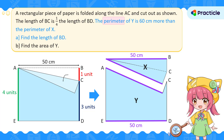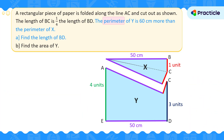Next, let's look at the breadth of the paper. Earlier on, we found that BC can be represented by 1 unit. Since these two triangles are equal, this side must also be 1 unit. Since we cut the shape here, this side and this side will be the same as well — this side is 1 unit too. CD is 3 units and AE is 4 units. Now that we've found how long all the sides of X and Y are, it's time to think about their perimeter.